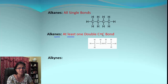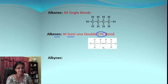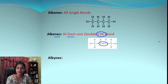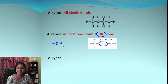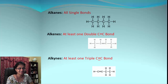Moving on to alkenes — in this case we need to have at least one carbon-carbon double bond. Look at the example: it's a carbon chain, but between two of the carbon atoms we have a double bond. Alkenes end with the suffix '-ene.'